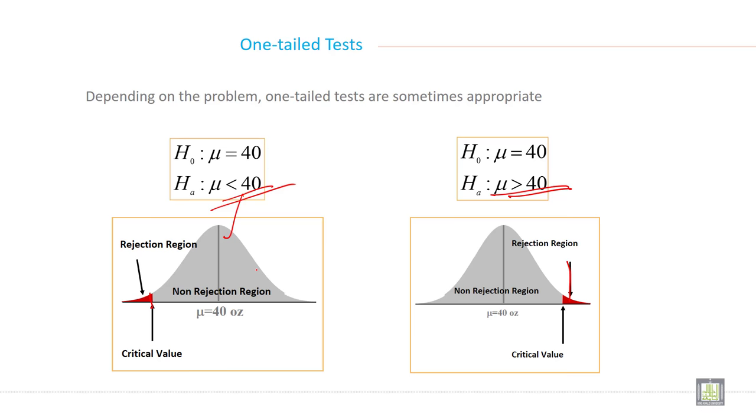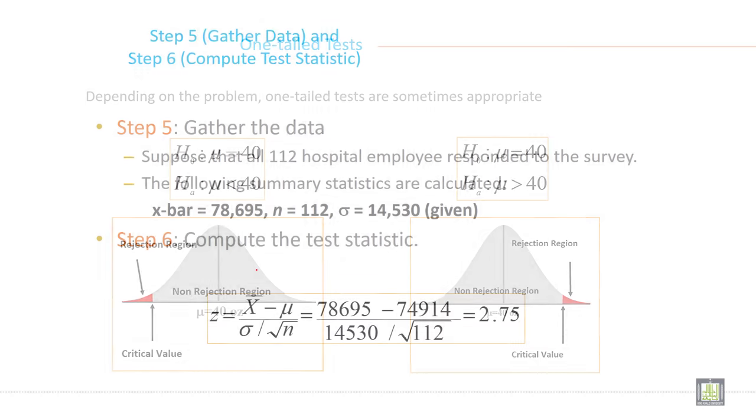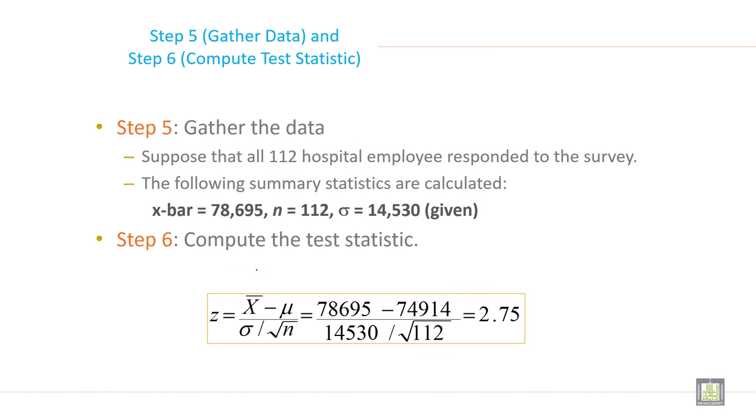Either it is on the left side or on the right side. Only one critical value. This is just for understanding and simplicity. Then we will come to step 5 and step 6 of hypothesis testing.